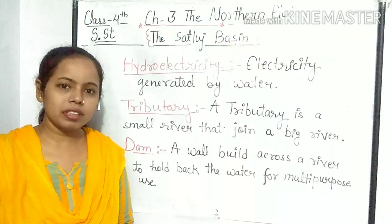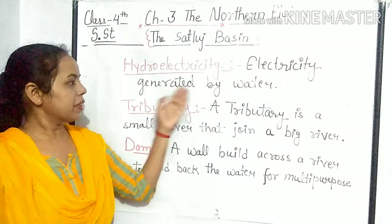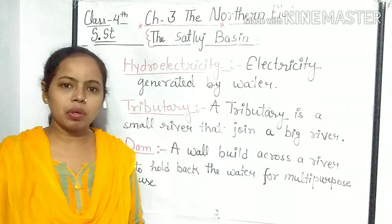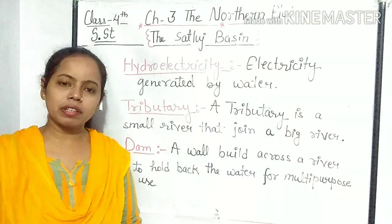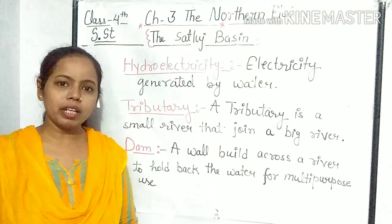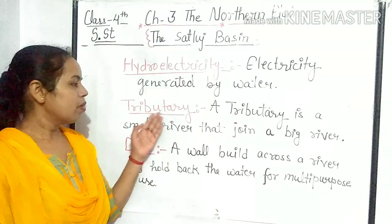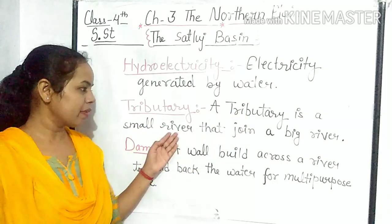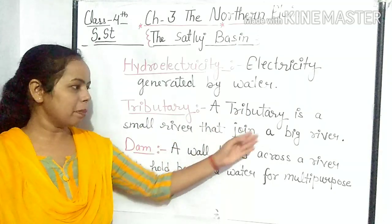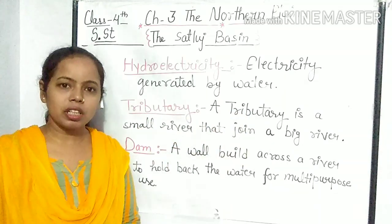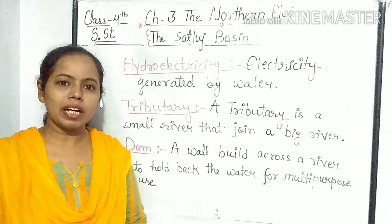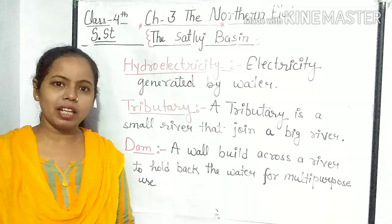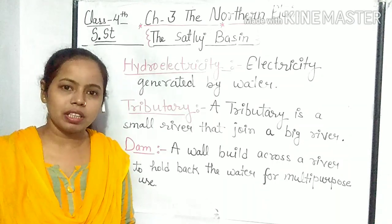Now let's know about dam, hydroelectricity and tributary. What is hydroelectricity? Electricity is generated by water. Paani ke dwara banayi gayi bijli ko hum hydroelectricity ke naam se jaante hain. What is a tributary? A tributary is a small river that joins a big river. Tributary ek chhoti nadi hoti hai jo aage chalke kisi badi nadi se mil jaati hai.